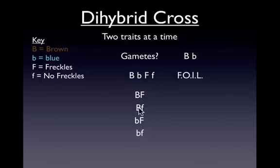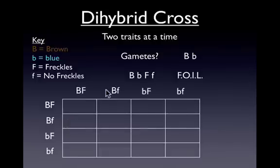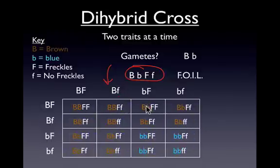As you can see, our Punnett square is going to get a little bit larger since we have four different gametes. So if we were to cross two of these individuals, this is what the Punnett square would look like — a four-by-four Punnett square. If we run it through, you can see that we have 16 different possible combinations for offspring.